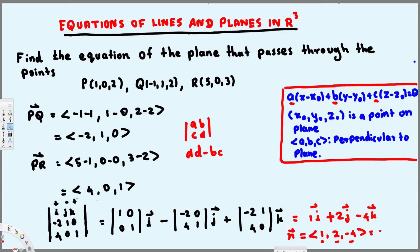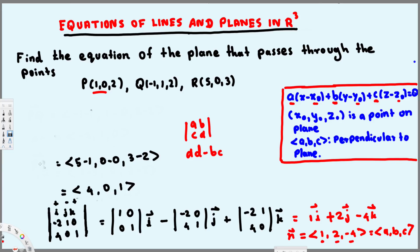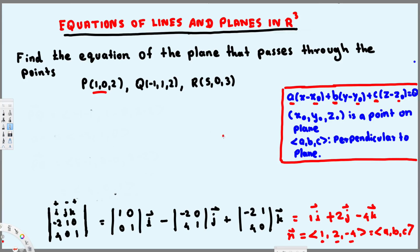To clarify, a, b, c are the components of our normal vector. We also need to pick one of the three given points for x₀, y₀, z₀. We'll use point P. The normal vector is (1, 2, -4) and the point P we are going to use is (1, 0, 2).